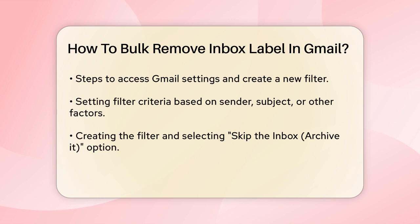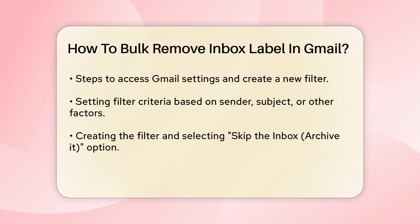Set up your filter criteria. For example, you can filter by sender, subject, or other criteria that apply to the emails you want to remove from the inbox. Once you've set your criteria, click on the Create Filter button. In the next window, check the box next to Skip the Inbox, Archive it. This will automatically archive the emails and remove the inbox label.